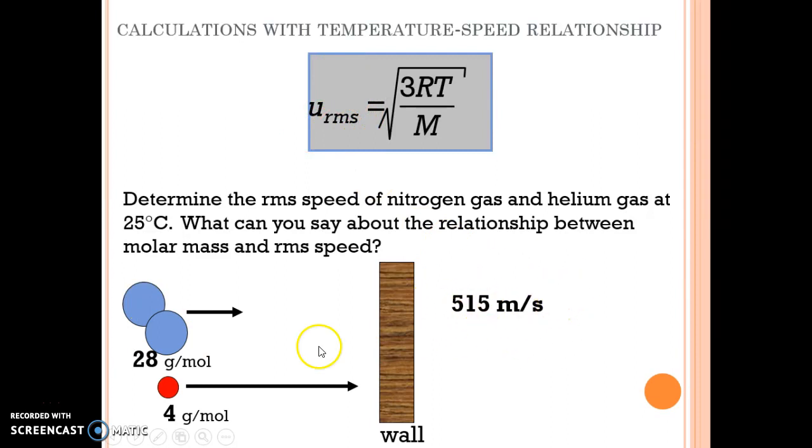Calculations, 515 for nitrogen, but 1360 for the helium gas. So smaller molecules are going to be moving at a faster speed overall.